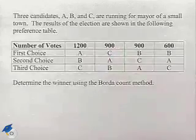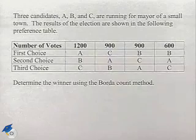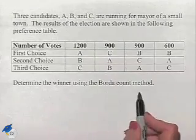Now let's look at one of our other voting methods. Three candidates, A, B, and C, are running for mayor of a small town. The results of the election are shown in the following preference table. Here we want to determine the winner using the Borda count method.